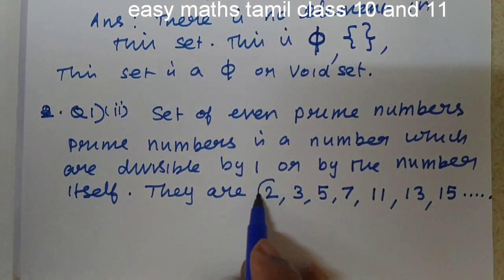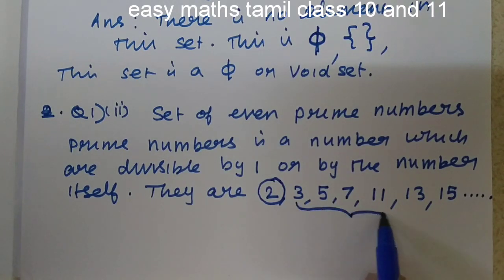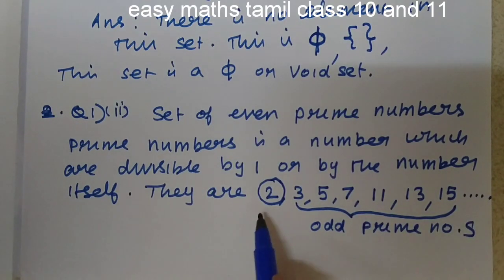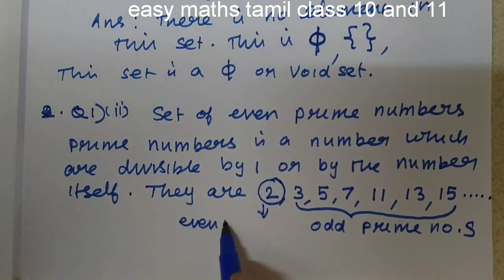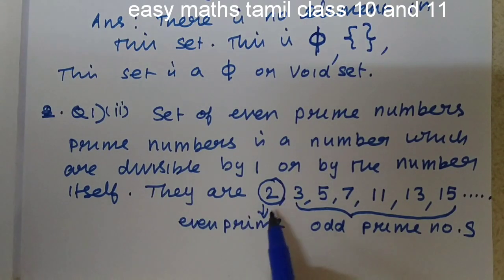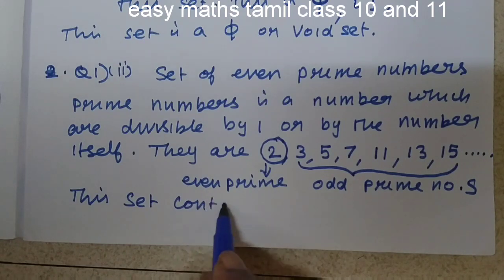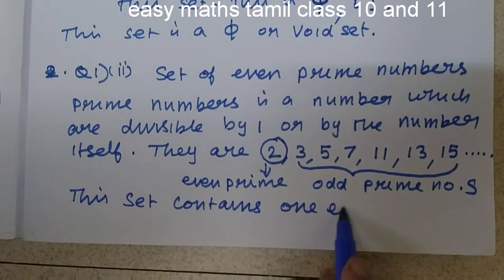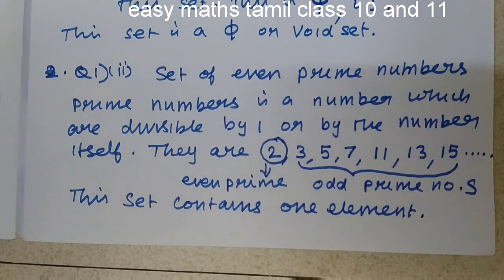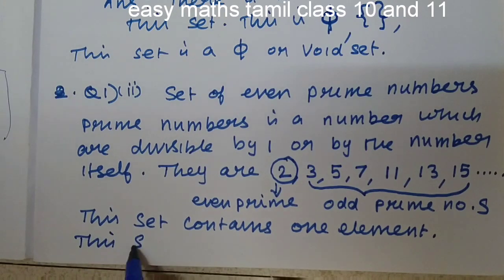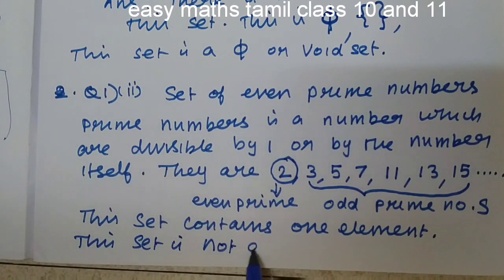This number 2 is an even number. All the other numbers are odd prime numbers. The only one even prime number is 2. So this set contains one element. This set is not a null set.